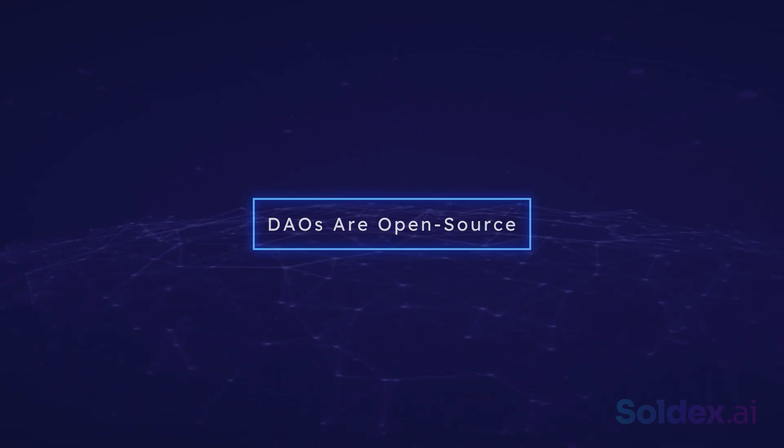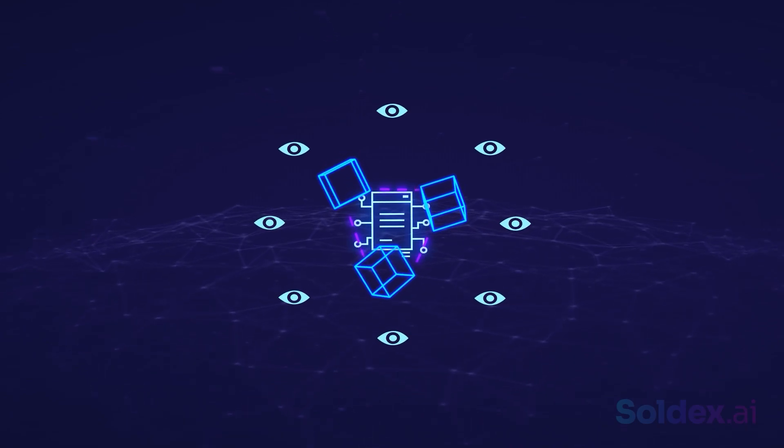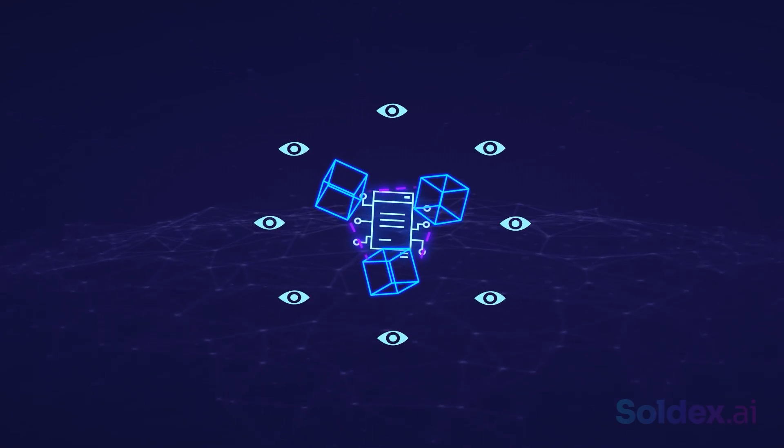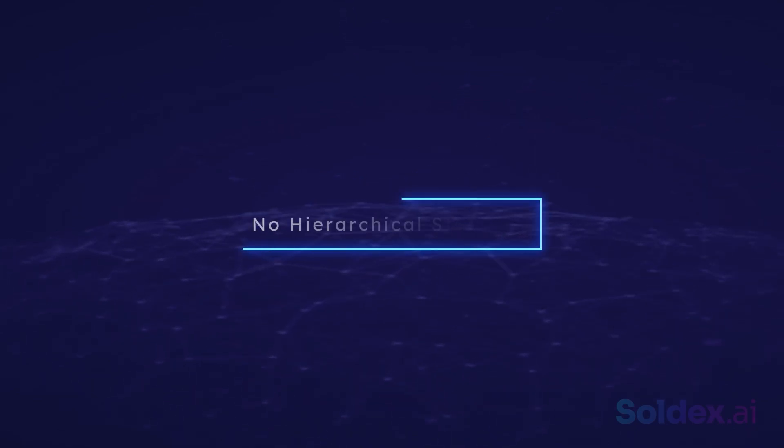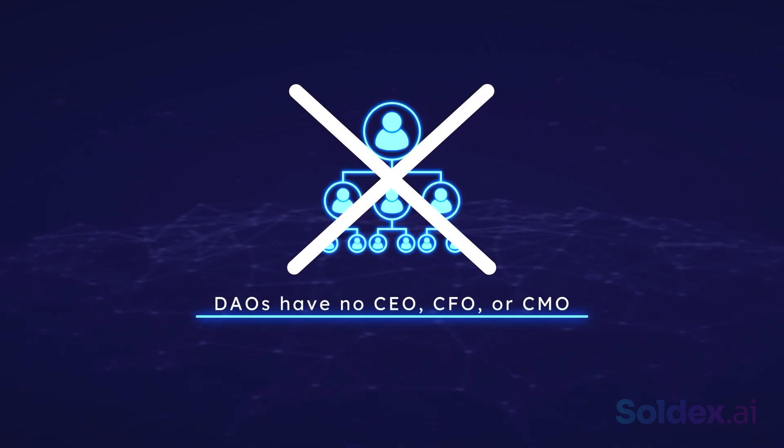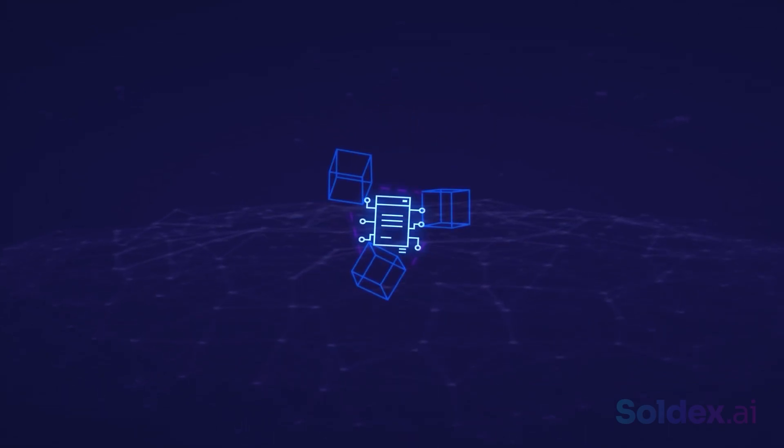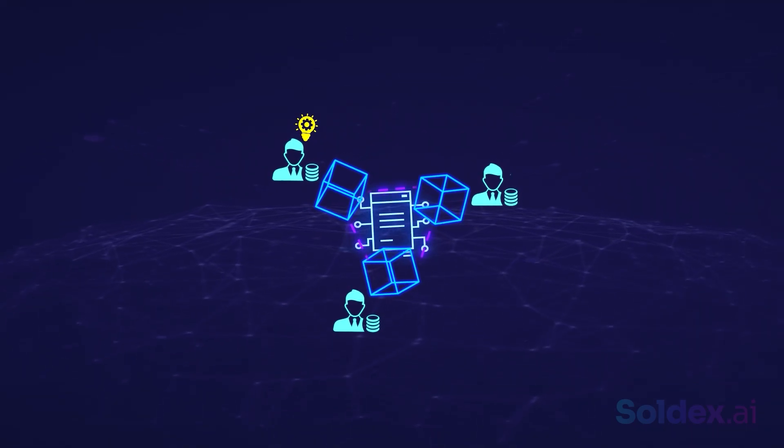DAOs are open source. The smart contract of a DAO is out there on the blockchain for anyone to see. This ensures that anyone can look at it, detect some bugs if there are any, and even propose ways to fix them. No hierarchical structure. DAOs have no CEO, CFO, or CMO common in a centralized system. Any stakeholder can propose an innovative idea that the rest of the members will consider and vote upon.